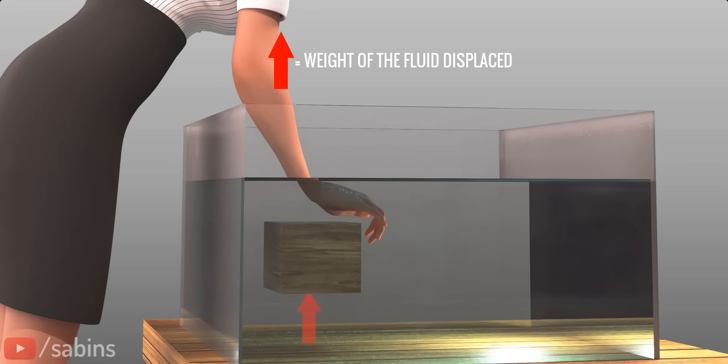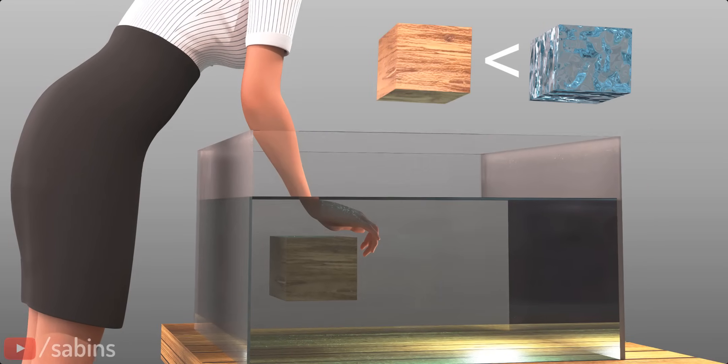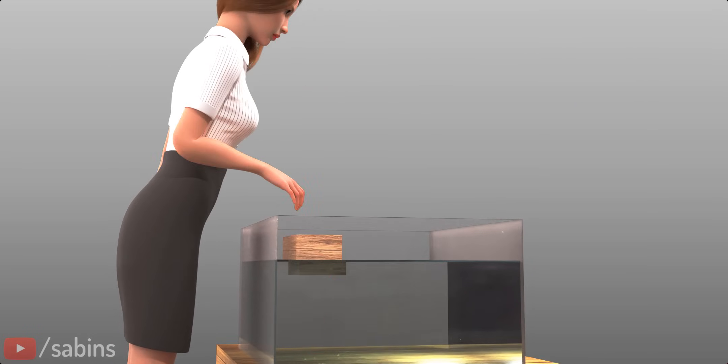Here, the water volume displaced by the block is shown. Obviously, the water volume's weight is more than the wood block's weight. This means the buoyancy force is more than the weight of the wood block, which is why the block moves upward as you release your hand.